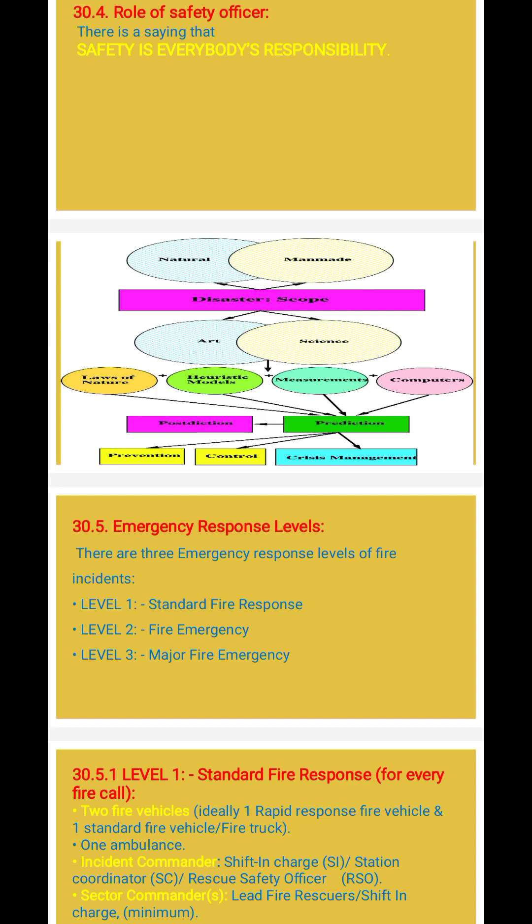Disaster scope: disasters are two types — natural and manmade. Disaster management is based on art and sciences, and it is based on predictions. For example, laws of nature, measurements, state prices, and changes. This covers post prevention, control, and crisis management.